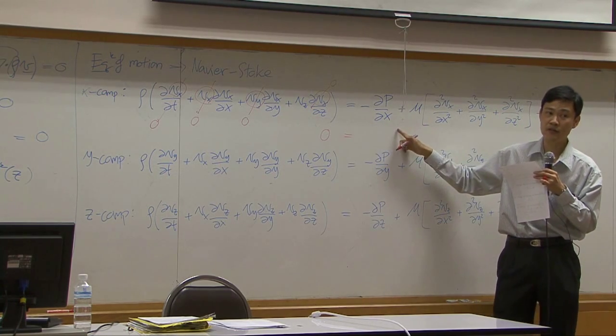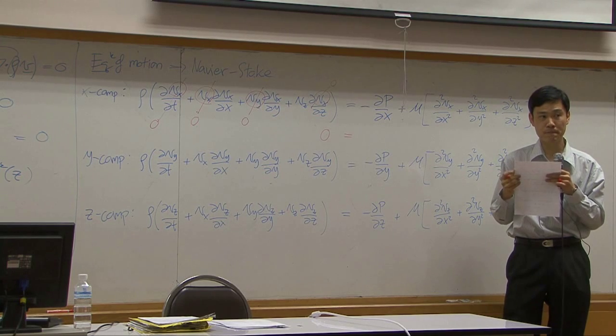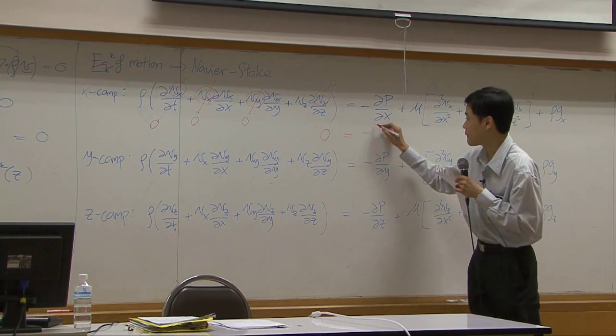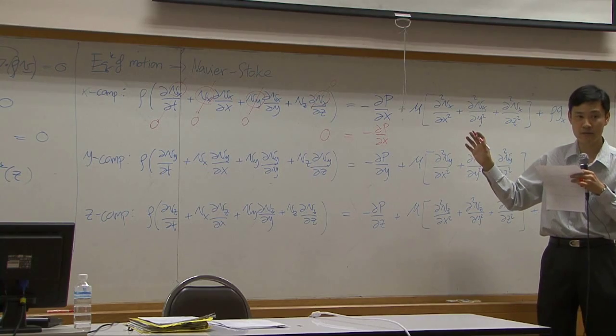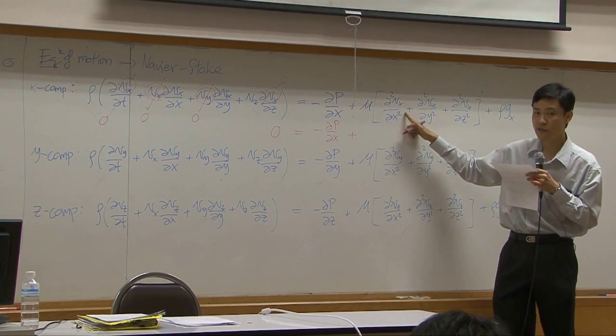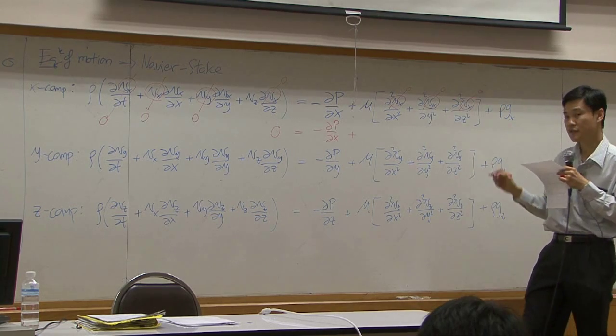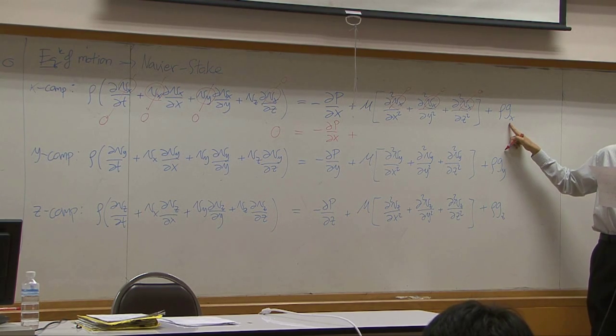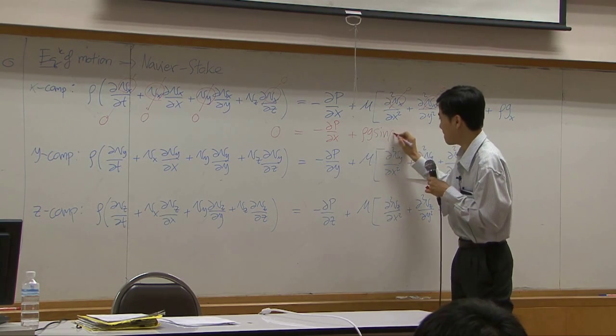First term, is pressure a function of x? Is it? Does pressure change with respect to x? If you do not know or if you are not sure, just put it down. Keep it for the moment. Okay. If you're not sure for any term, keep it. And then you will realize later that you still need to eliminate some. This term, is it zero? Vx here is zero. Vx there and there are zero. Okay. Gx is zero. It's not zero. Okay. So now you have rho g sin beta.